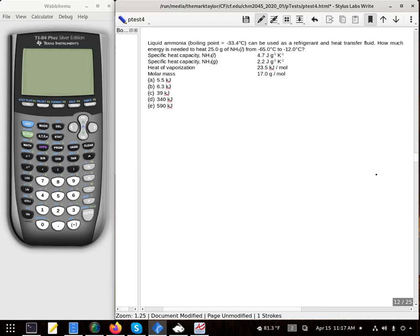Alright, liquid ammonia with a boiling point of negative 33 degrees can be used as a refrigerant and heat transfer fluid. How much energy is needed to heat 25 grams of liquid ammonia from negative 65 degrees Celsius to negative 12?